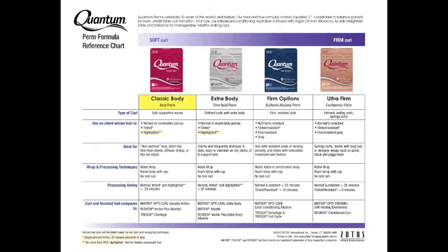Both Quantum Classic Body and Quantum Extra Body are in those categories. So now what determines which one of those perms to use? Let's go to the type of curl at the top of the chart. Do we want to achieve soft body, or are we looking for a more medium to versatile type of curl?